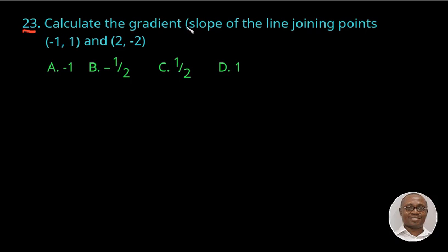Calculate the gradient, that is the slope of the line joining points (-1, 1) and (2, -2). Let us quickly note the points in the coordinates. This will be x1 and this will be y1. This will be x2 and this will be y2.